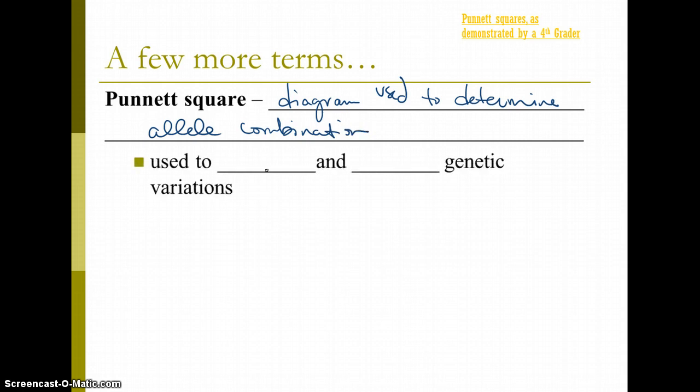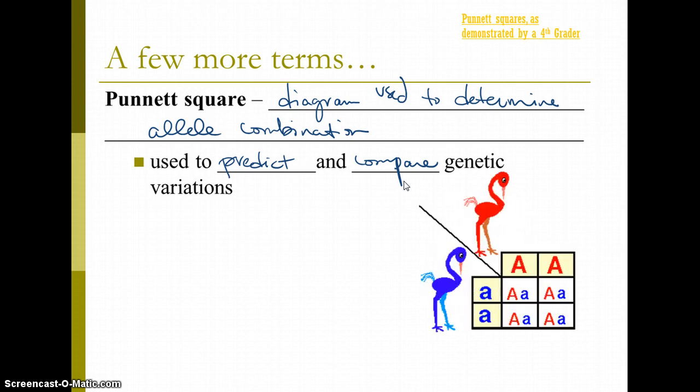And it's used to predict and compare genetic variations. I think you've learned, you've seen these before. This is a Punnett square.